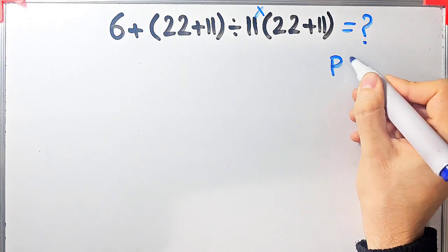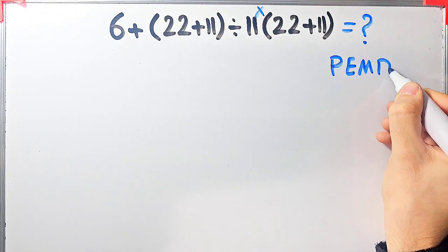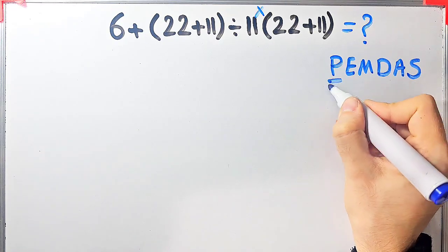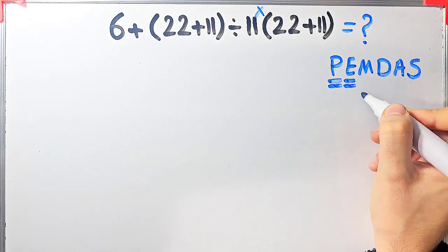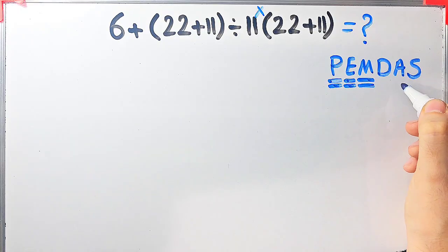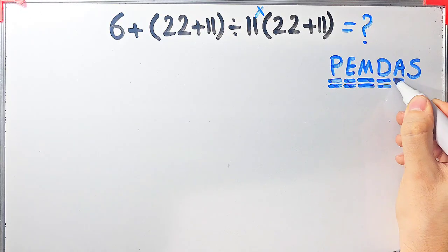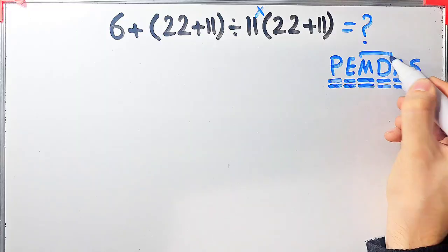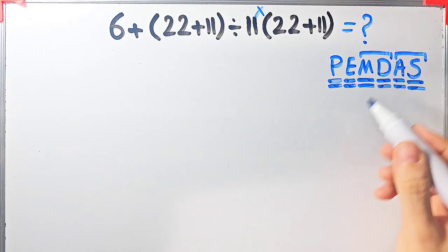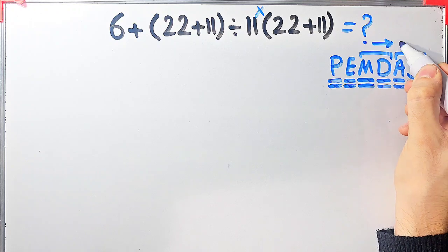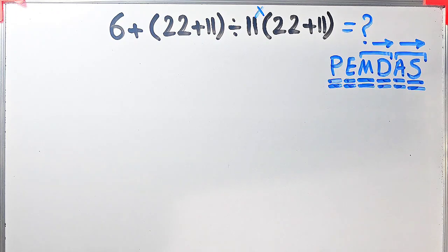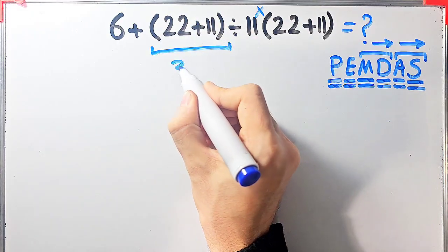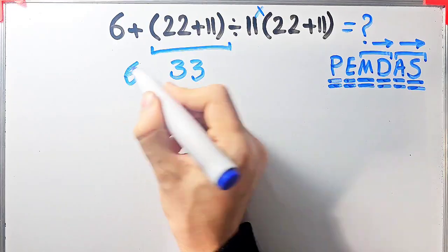To solve this question we need to follow the order of operations which is PEMDAS. PEMDAS shows the priority of the mathematical operations, and if you don't pay attention to this rule you get the wrong answer. P stands for parentheses, E for exponent, M for multiplication, D for division, A for addition, and S for subtraction. According to the PEMDAS rule, first we simplify the parentheses. Inside the parentheses we have 22 plus 11. 22 plus 11 equals 33.